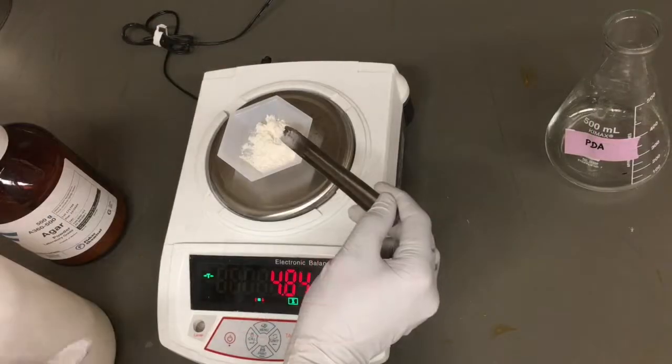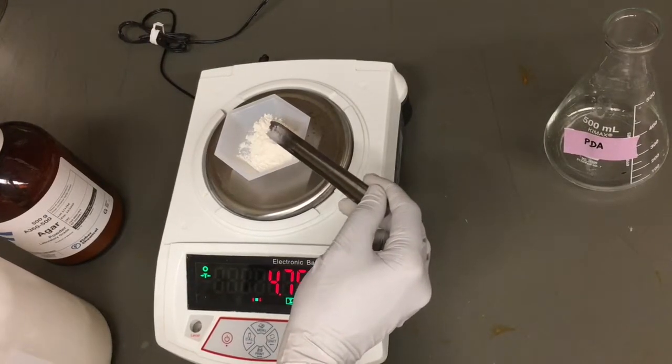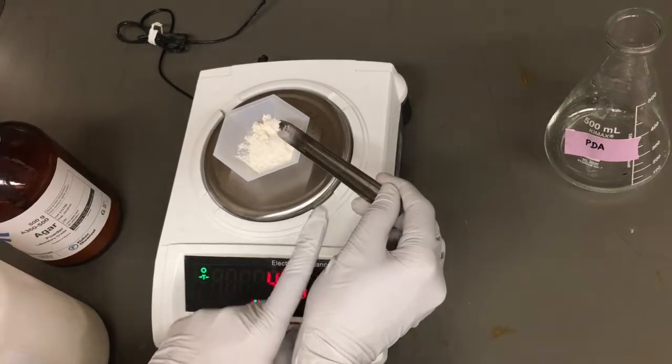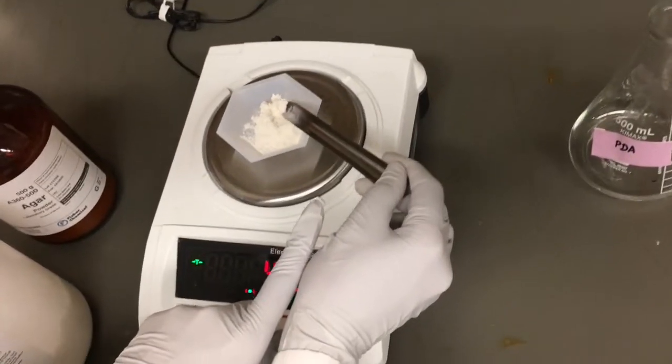Slowly add the powdered media while weighing. If you add too much, remove it and adjust until accurate. You want to dispose of excess to the waste and never back into the bottle.